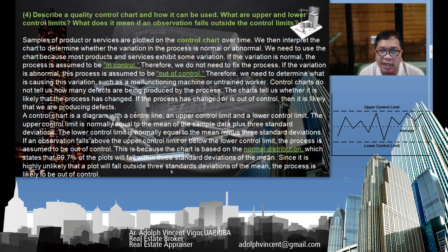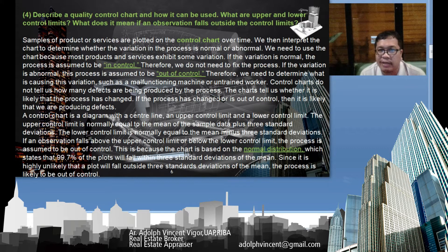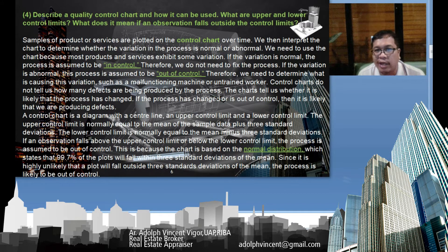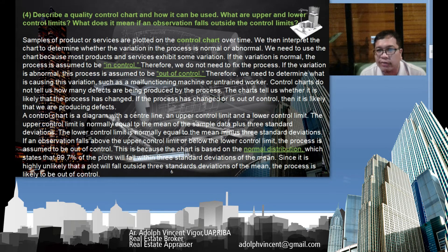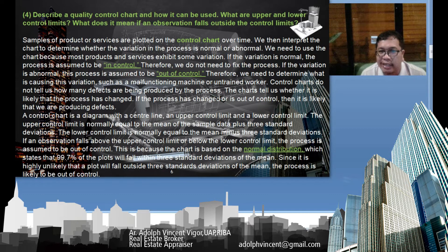For the fourth question: describe quality control charts and how they can be used, including upper and lower limits, and what it means when an observation falls outside the control limit. Samples of a product or service are plotted on the control chart, and the chart is interpreted to determine whether variation is normal or abnormal. If variation is normal, the process is assumed to be in control; if abnormal, the process is assumed to be out of control, meaning the process has likely changed and defective units are likely being produced.